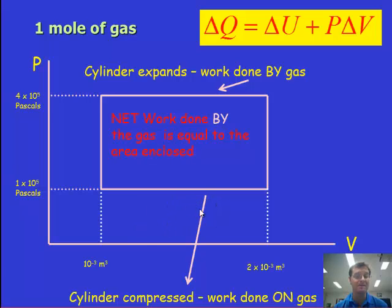The thing to recognize here is if we're compressing, the work done on the gas will be the area underneath the curve. When the gas expands, we've got the work done by the gas. That means the net work done by the gas is equal to the area enclosed, so the net work done is the work done by the gas in total minus the work done on the gas.